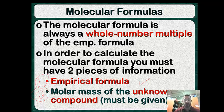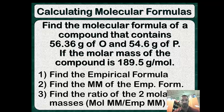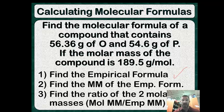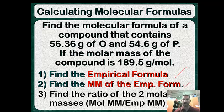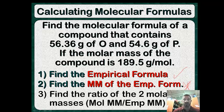Here are our three steps for calculating molecular formulas. First, find the empirical formula — that's what we've always done. Second, find the molar mass of the empirical formula — this is new. Third, find the ratio of the two molar masses: molecular formula molar mass divided by empirical formula molar mass — that's also new. Let's apply these to our first problem.